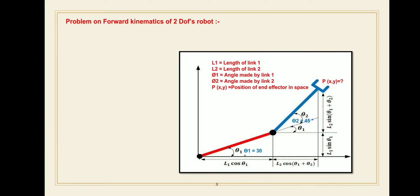Hello friends, today we will show you how you can solve the forward kinematics problem of a two degrees of freedom robot. In a previous lecture we already discussed the concept and derived the equations for forward kinematics of a two-DOF robot. Forward kinematics is the process to get the coordinates of the end effector from given angles of all joints. All joint angle parameters and joint space parameters — l1, l2, theta1, theta2 — are given, and you have to find out the Cartesian space coordinates.